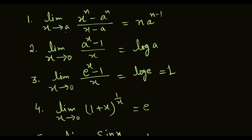Note that only the first formula has x approaches to a; the rest have x approaches to 0. Formula 1: limit x approaches to a, x power n minus a power n, upon x minus a, equal to n times a power n minus 1. Here x gets eliminated. We will derive this formula in another video.